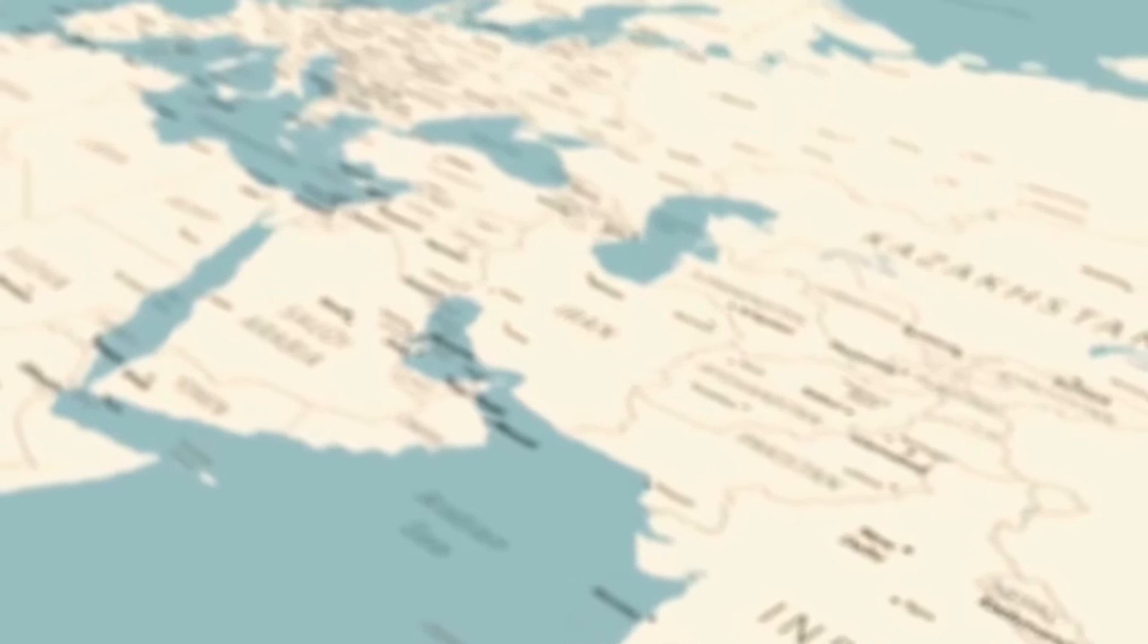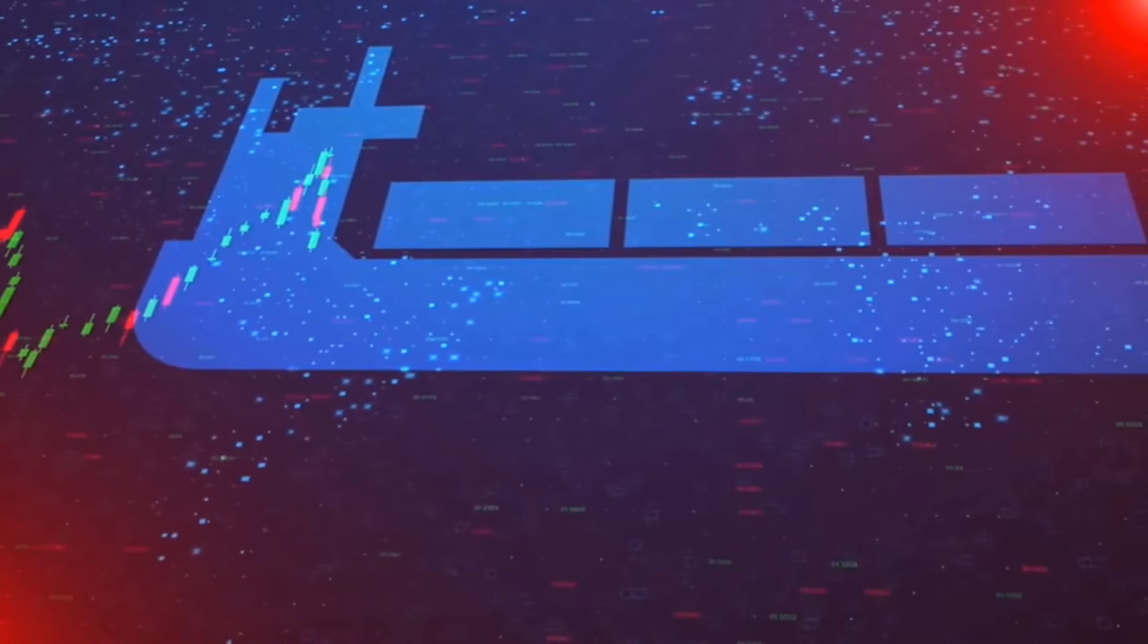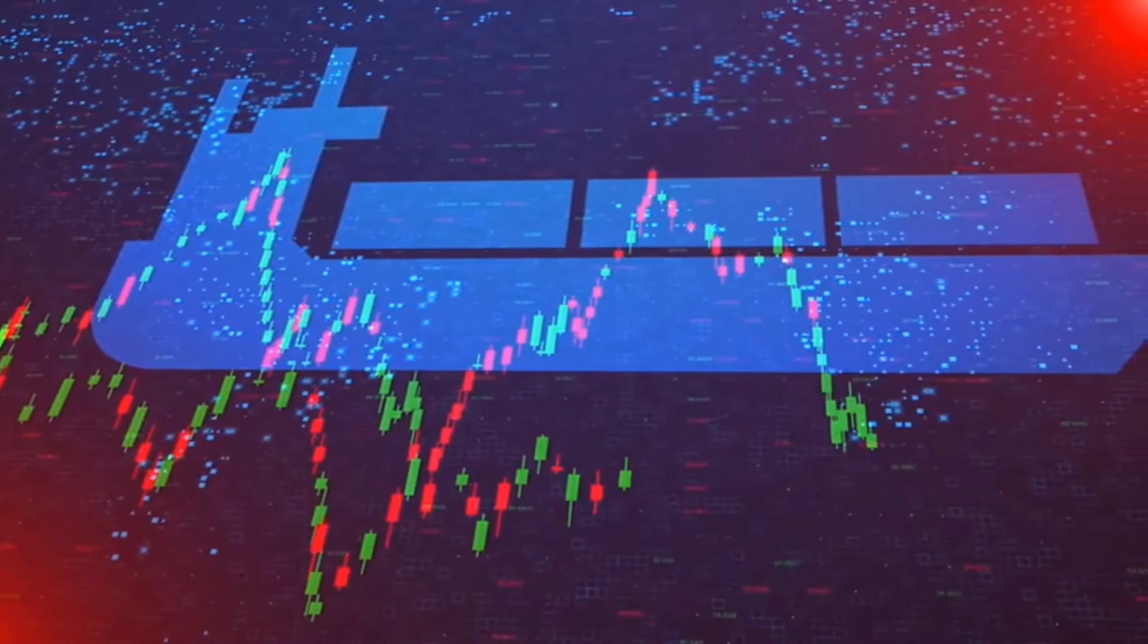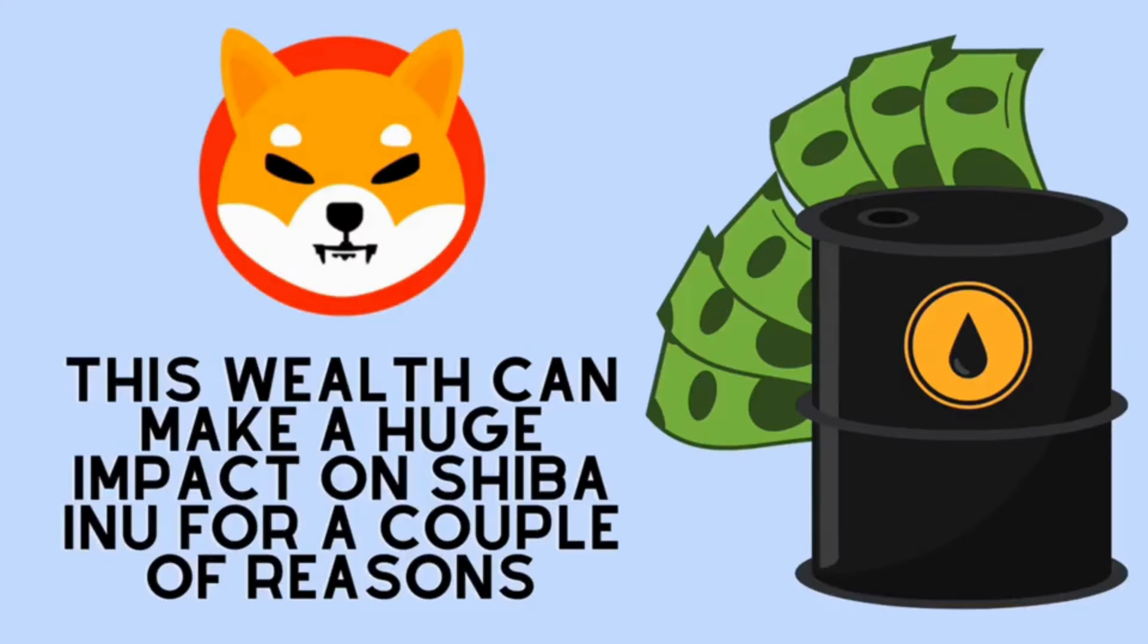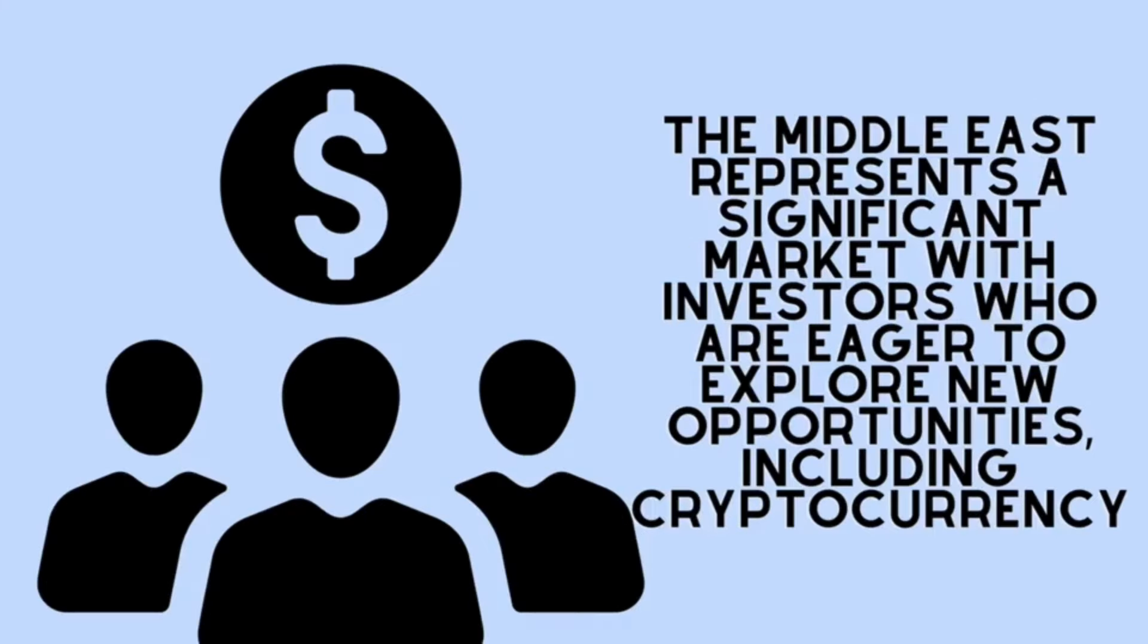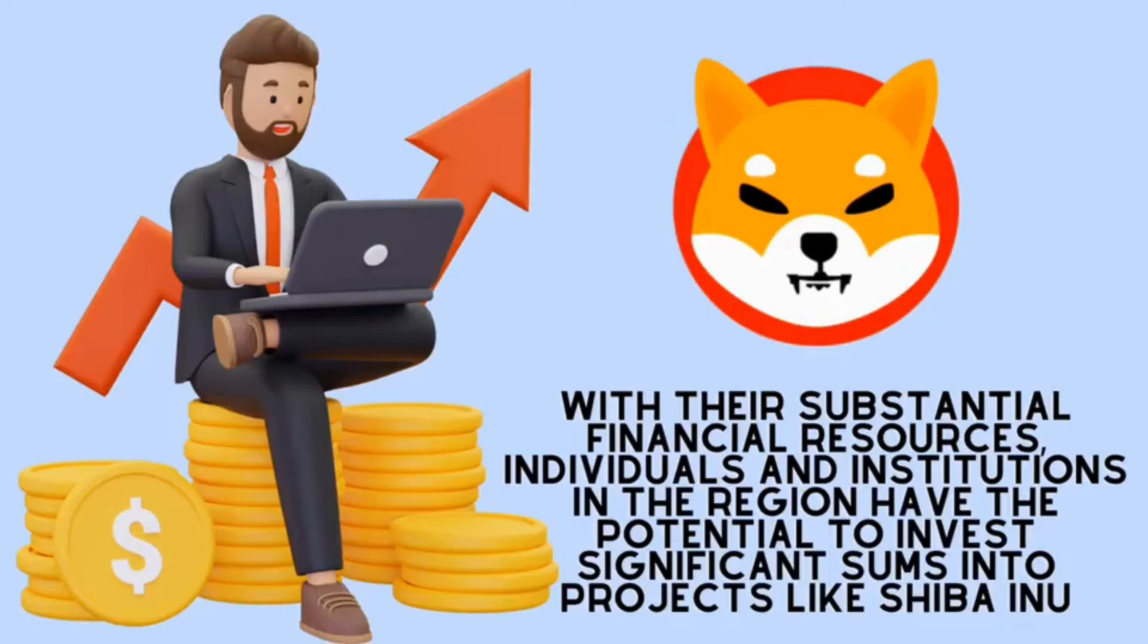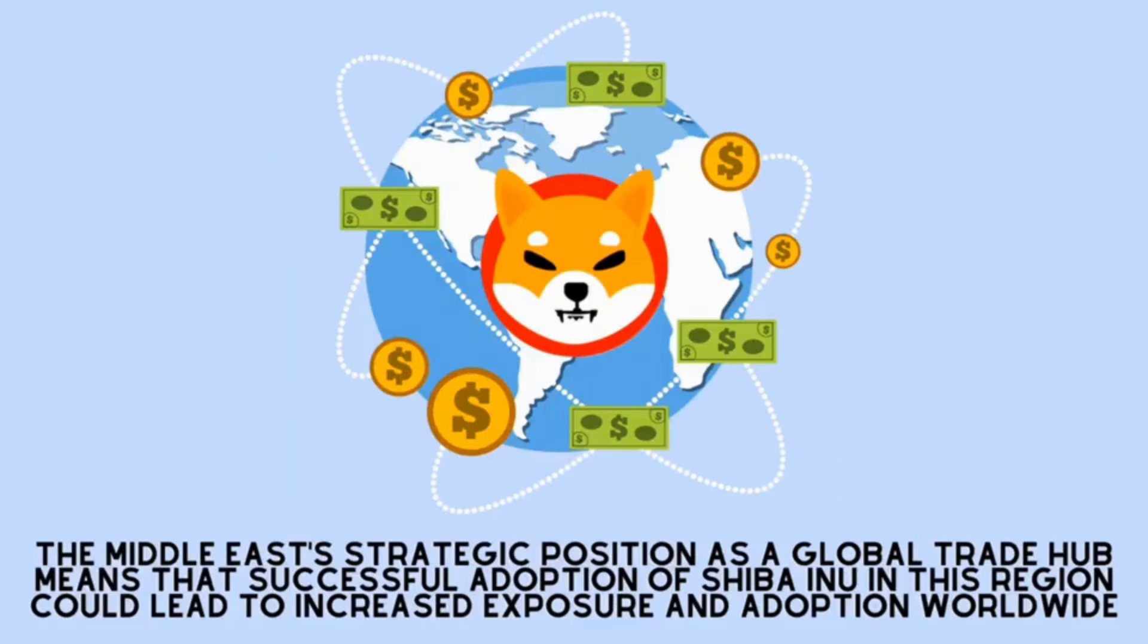And let's not forget how important the Middle East is. This region is incredibly wealthy due to its abundant oil reserves and strategic location for global trade. The wealth generated from oil has led to immense financial power in countries like the United Arab Emirates, including Dubai. This wealth can make a huge impact on Shiba Inu for a couple of reasons. Firstly, the Middle East represents a significant market with investors who are eager to explore new opportunities, including cryptocurrency, with their substantial financial resources. Individuals and institutions in the region have the potential to invest significant sums into projects like Shiba Inu.